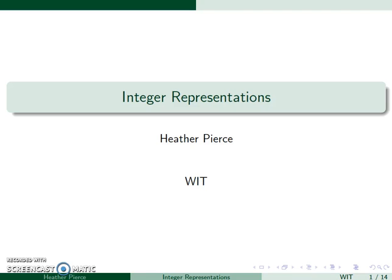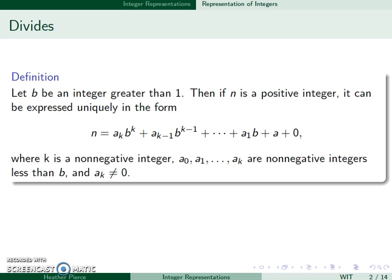We will now look at integer representations, which is basically converting between different bases. If b is an integer greater than 1 and n is a positive integer, we can express it uniquely in the form a_k × b^k + a_(k-1) × b^(k-1) + ... + a_1 × b + a_0, where k is a non-negative integer and a_0 through a_k are non-negative integers less than b.